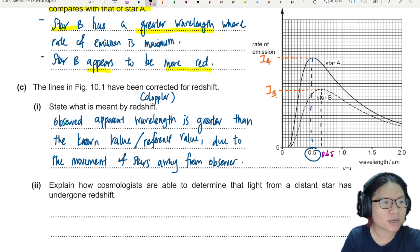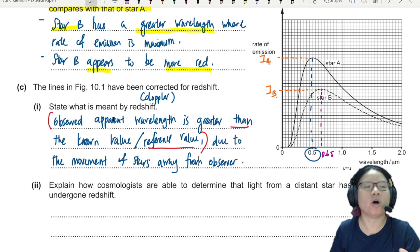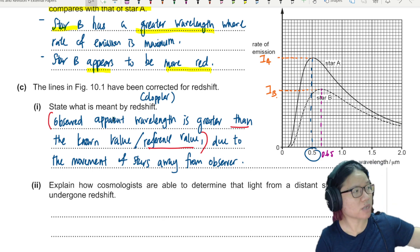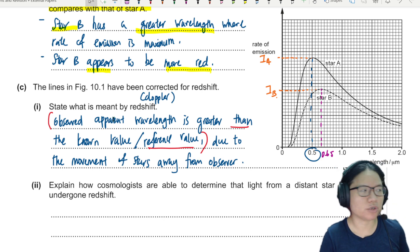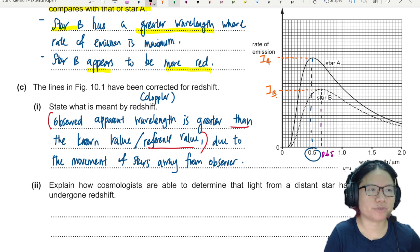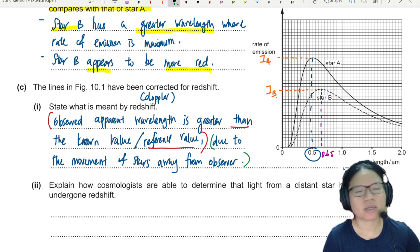Number one, the observed wavelength is greater than either a known value or a reference value. Reference value or known value is needed. Because if you say greater than greater compared to, so you must say that the observed frequency is greater compared to the known value. Like for example, red, this color supposed to, I mean, this wavelength supposed to be this, but when I measure the star, hey, the wavelength is actually greater than what I expect. Why? All right. The next one, this is because it is due to the movement of the star and the observer.